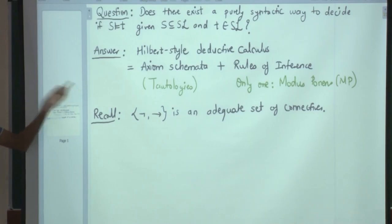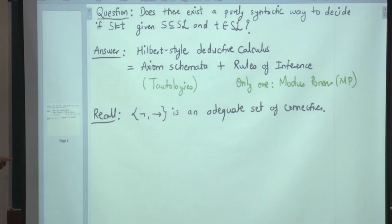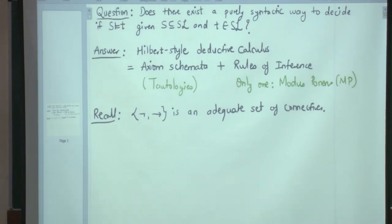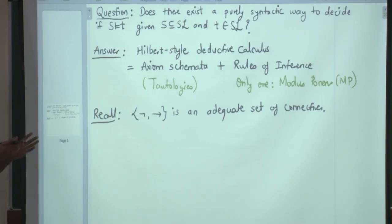There is another answer to this question, that is natural deduction system or Gentzen-style system. But we are not going to cover that in our course. If you are interested, please go and read about it in any good logic book — I have given you lots of references. That system has very few axioms but mostly contains rules of inference.